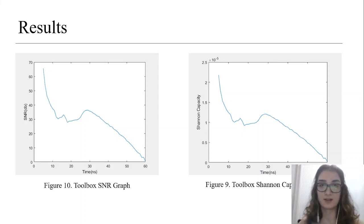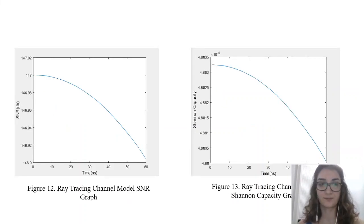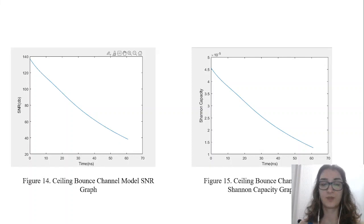This is the results section. First two figures are SNR graph and channel capacity graph of the toolbox. These figures are ray tracing channel model SNR graph and channel capacity graph. These are ceiling bounce channel model SNR graph and channel capacity graph.